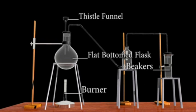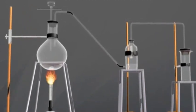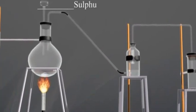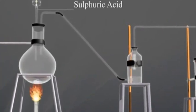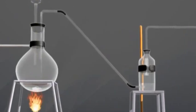Now let us see the procedure. Set up the apparatus shown in the animation. Place a common salt like sodium chloride in flat bottom flask and pour concentrated sulfuric acid through the thistle funnel. A rapid evolution of gas occurs.